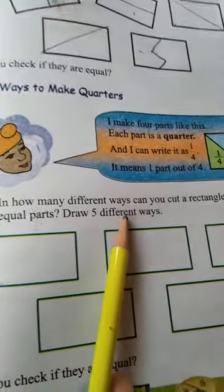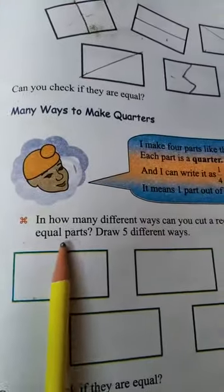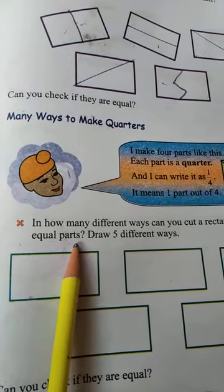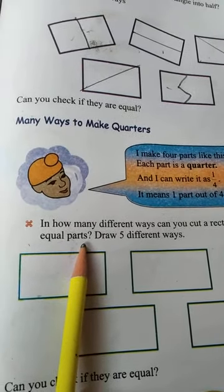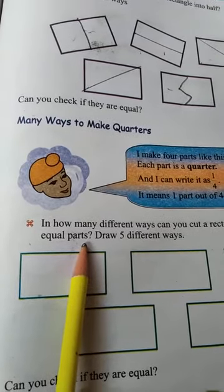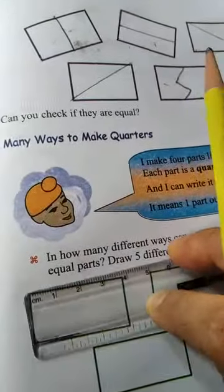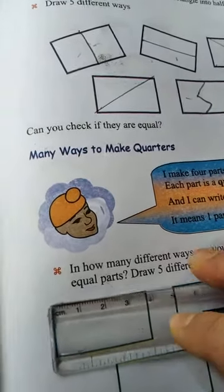In how many different ways can you cut a rectangle into 4 equal parts? So divide the rectangle. Draw 5 different ways you can cut a rectangle. Let's check. Measurement 1 cm by 4. So we cut it into 4 parts.